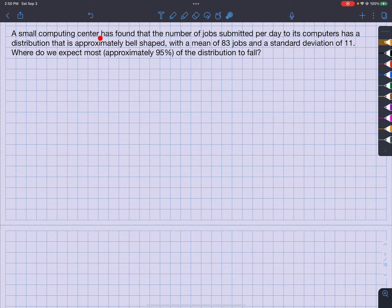A small computing center has found that the number of jobs submitted per day to its computers has a distribution that is approximately bell-shaped. Bell-shaped. That's good. With a mean of 83 jobs and a standard deviation of 11, where do we expect approximately 95% of the distribution to fall?